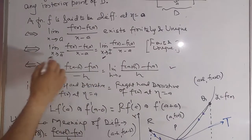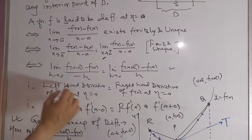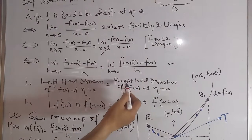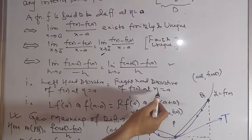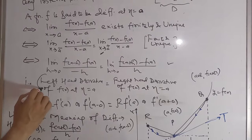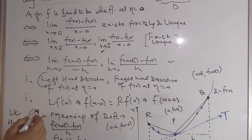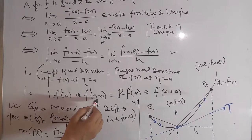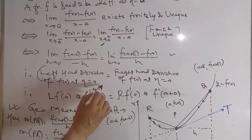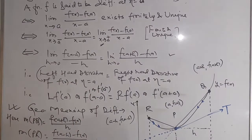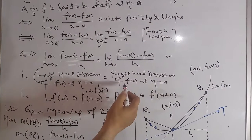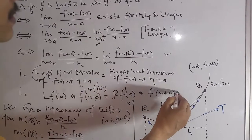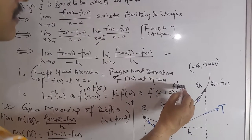The left expression is called the left-hand derivative of f(x) at x equal to a, and the right expression is called the right-hand derivative of f(x) at x equal to a. The left-hand derivative at x equal to a is denoted by Lf'(a) or f'(a minus 0), and the right-hand derivative by Rf'(a) or f'(a plus 0).